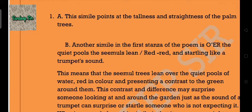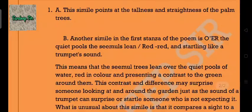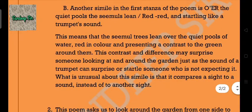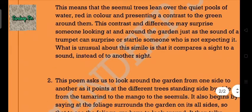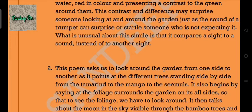This means that the simul trees lean over the quiet pools of water, red in color, and presenting a contrast to the green around them. This contrast and difference may surprise someone looking at and around the garden, just as the sound of a trumpet can surprise or startle someone who is not expecting it. What is unusual about this simile is that it compares a sight to a sound instead of to another sight.